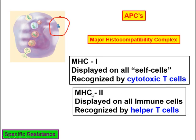The other type is MHC2, which is displayed on all immune cells — meaning lymphocytes, macrophages, and dendritic cells. Those are only going to be recognized by helper T cells. So we have two complexes, and we'll get more specific with each type of adaptive immunity in additional videos.